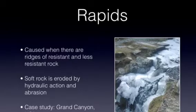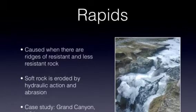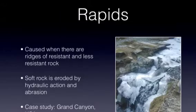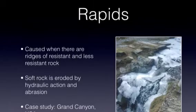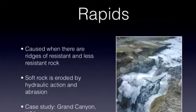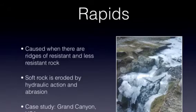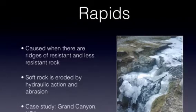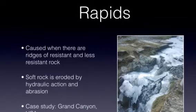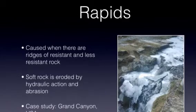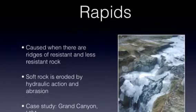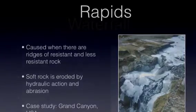Rapids are areas along the river course where water becomes more turbulent. They are caused when there are ridges of resistant and less resistant rock. The ridges of soft rock are eroded by hydraulic action and abrasion, therefore creating an uneven surface and white water rapids. If you want to use a case study for this, you can use the Grand Canyon in the United States of America.